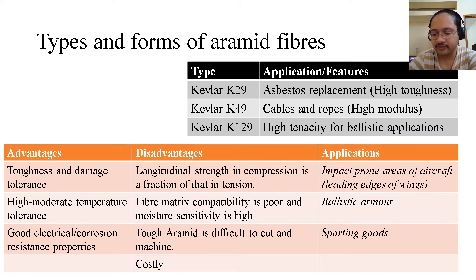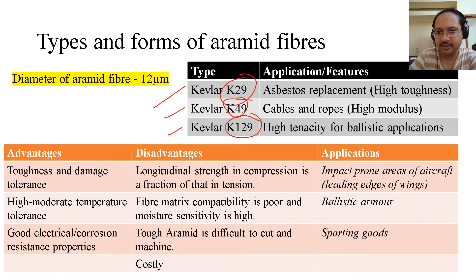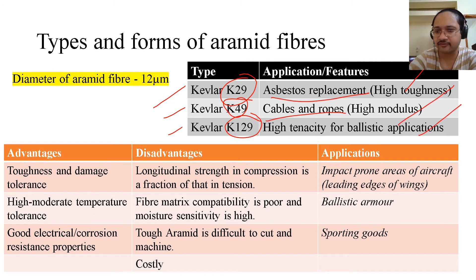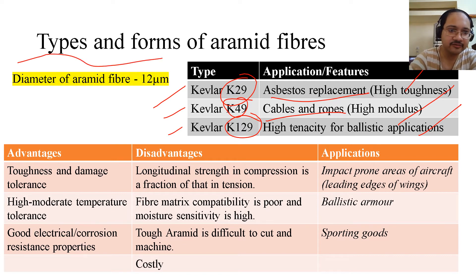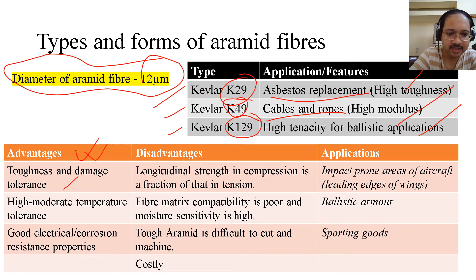There are three types of aramid fibers: K29, K49, and K129. They have different applications — K29 is for asbestos replacement with high toughness, K49 is for high-modulus cables and ropes, and K129 is for high-tenacity ballistic applications, meaning impact resistance. The typical diameter of an aramid fiber is 12 microns.